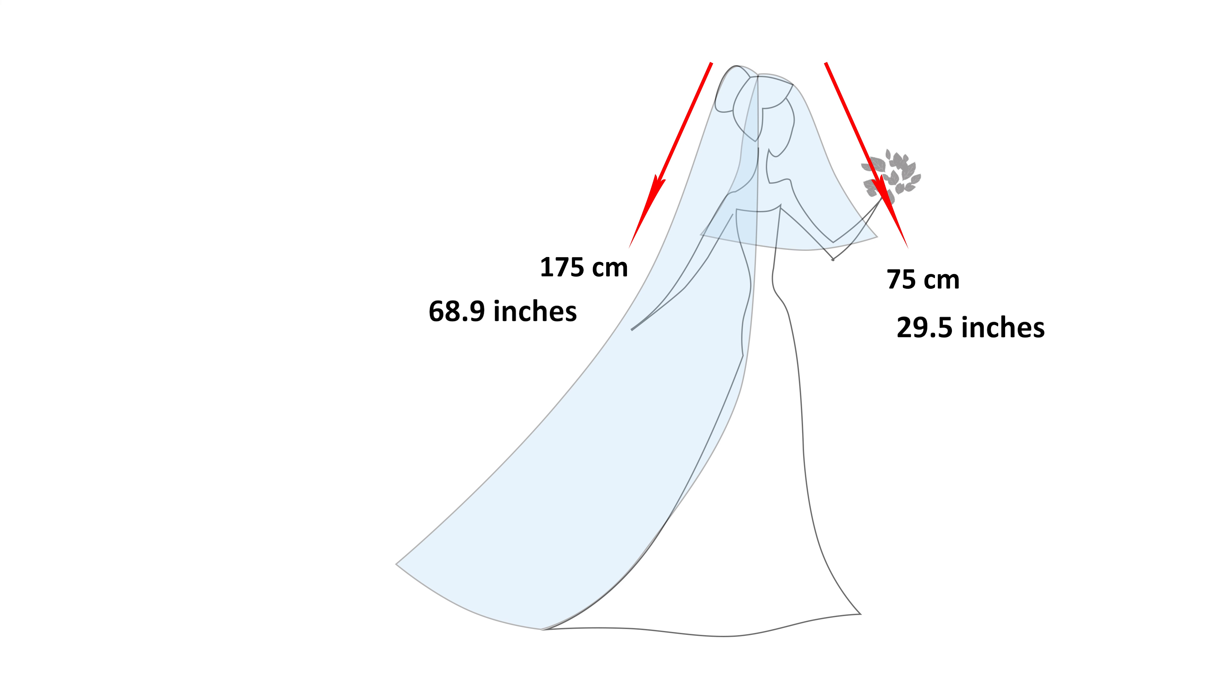To calculate the length of fabric needed for this veil, add these measurements together. 75 plus 175 equals 250 centimeters, 98.4 inches.